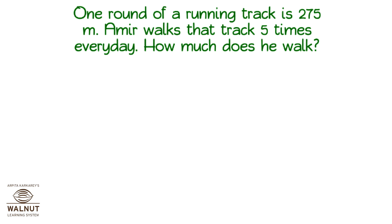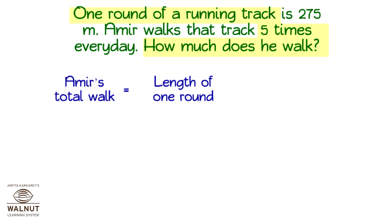One round of a running track is 275 metres. Aamir walks that track 5 times every day. How much does he walk? What do we have to find out? How much Aamir walks. What do we know? The length of the track and the number of rounds. We know the length of one round and we have to find the length of many rounds. This is obviously a multiplication problem. So, the total length is the length of one round multiplied by the number of rounds.